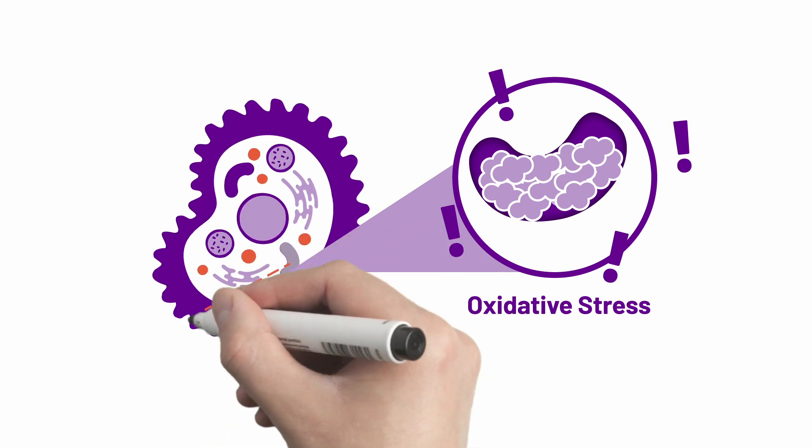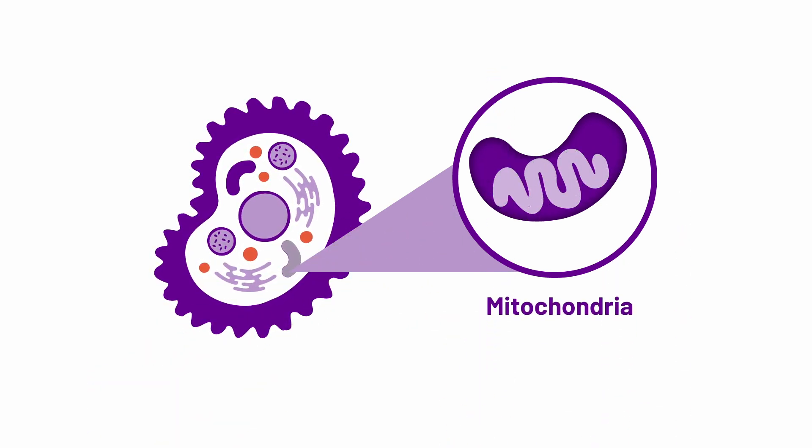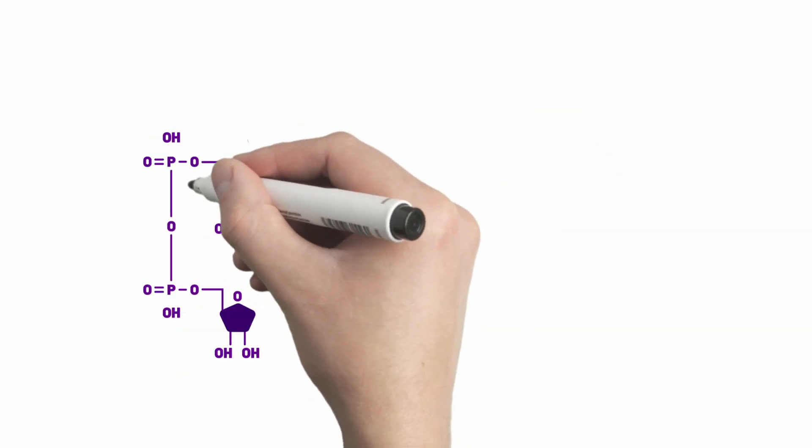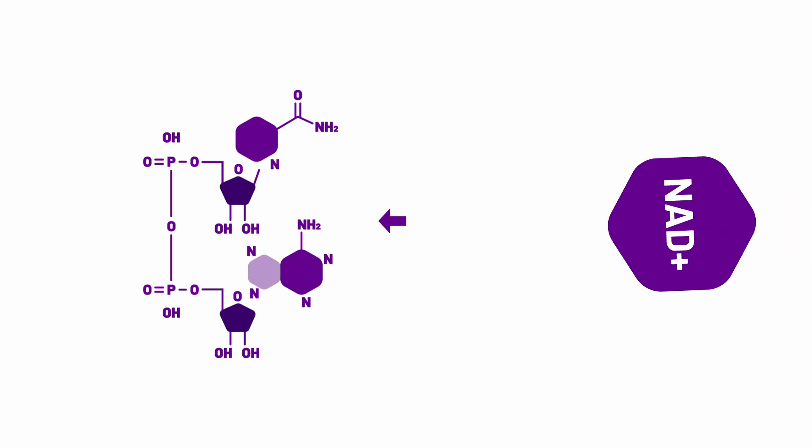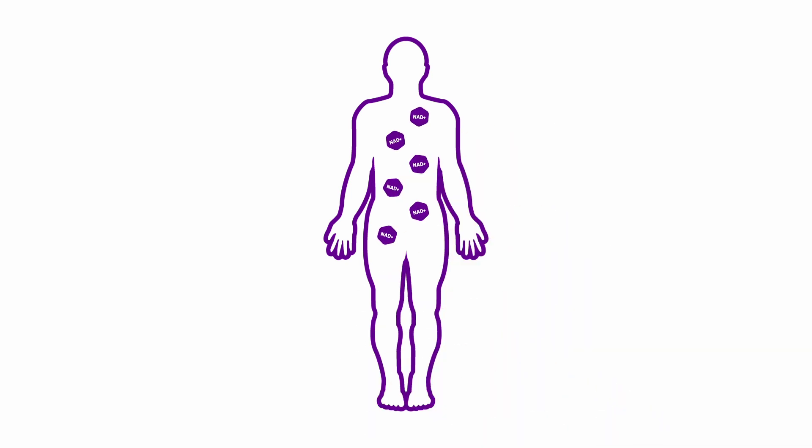To avoid this, we have evolved multiple signals which can set off chain reactions to correct, stop, or reverse this damage. One of these critical intermediaries is called NAD+, or nicotinamide adenine dinucleotide. This critical coenzyme is found in every cell in the body, which means it will initiate or assist in hundreds of metabolic reactions.